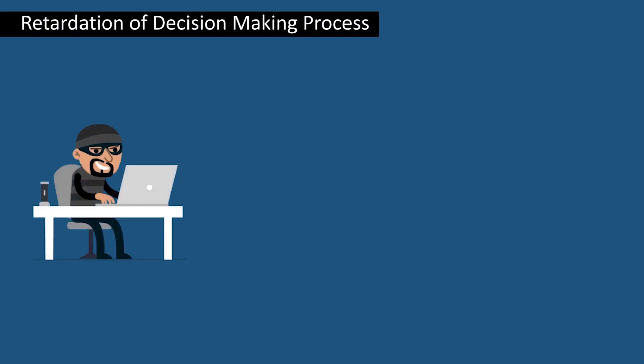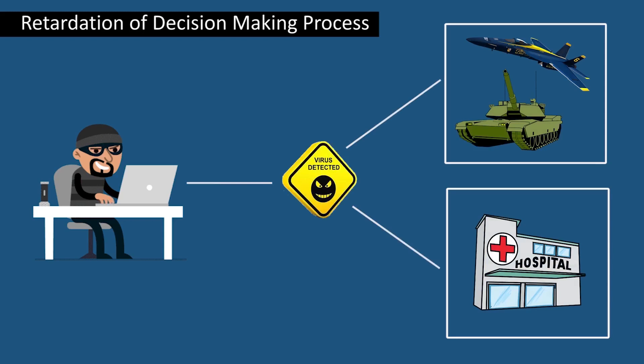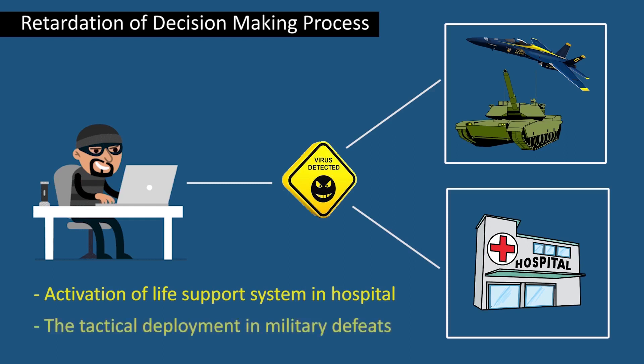Next is the retardation of the decision-making process. In emergency services like military and other government services, cyberattacks play a major role. It causes delay in the decision-making process, like activation of a life support system in the hospital, which may sometimes cause the death of patients, and tactical deployment failures in the military are some examples of this type.